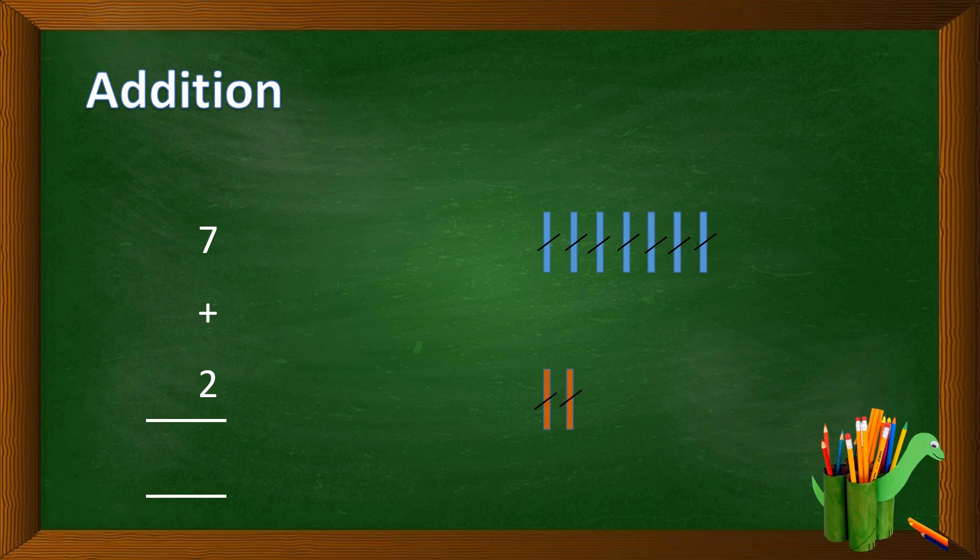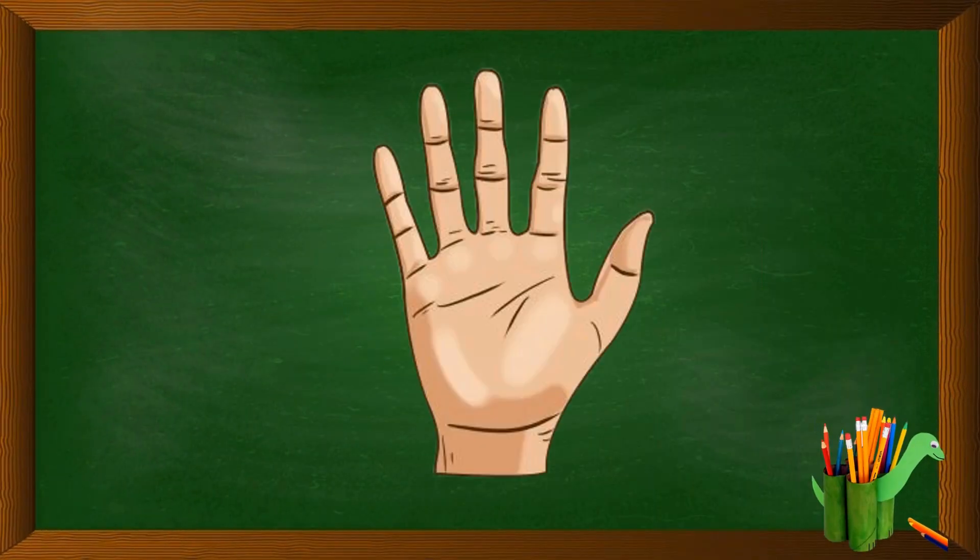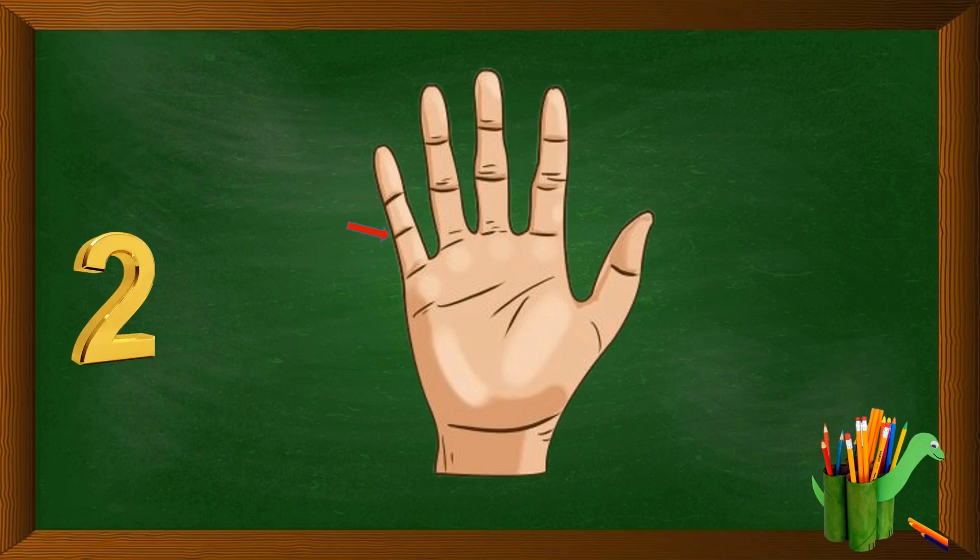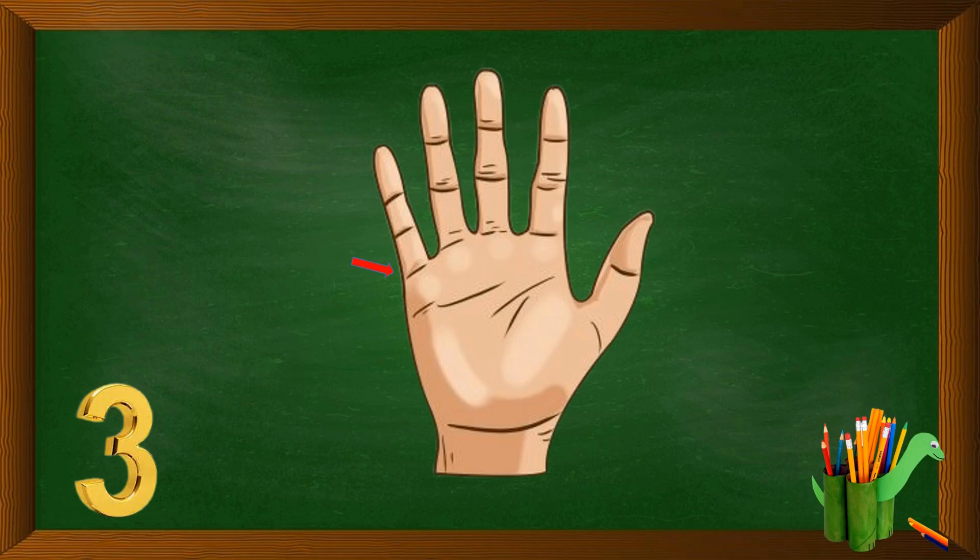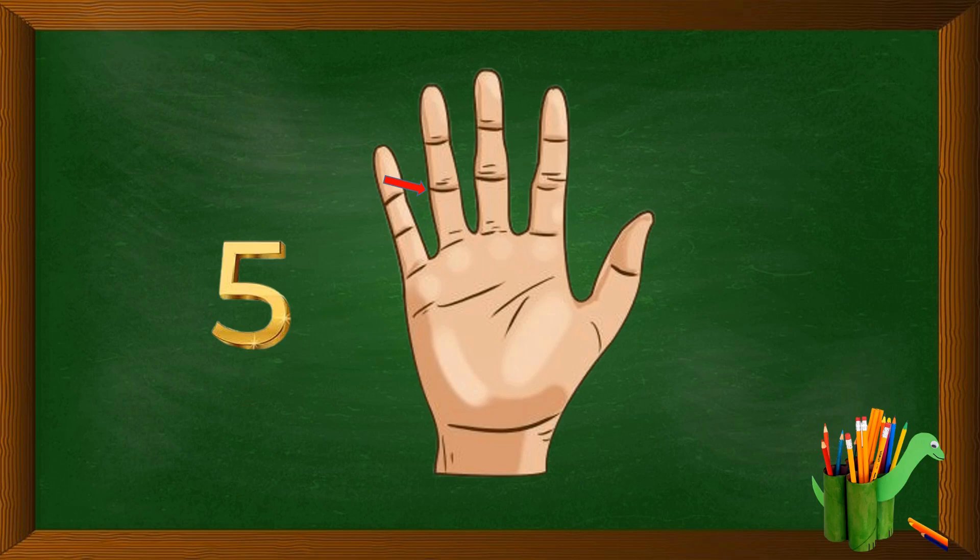So the sum of 7 and 2 is 9. Kids, is this a magic? No. Now we count on our fingers. With the help of fingers: 1, 2, 3, 4, 5, 6. Now kids, you know how to count on your fingers.